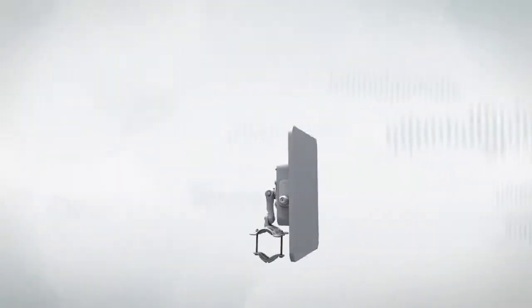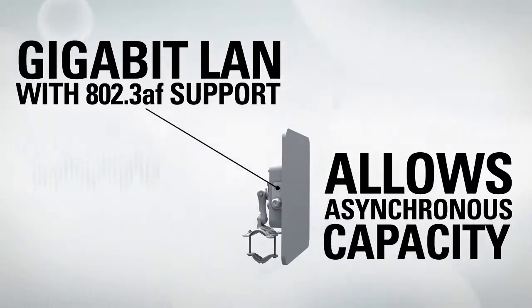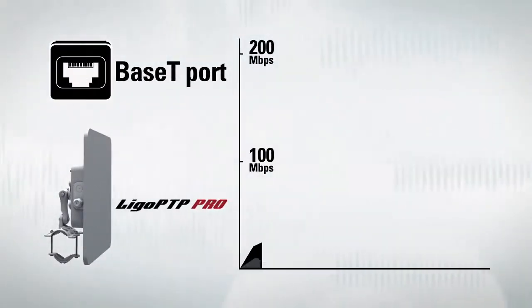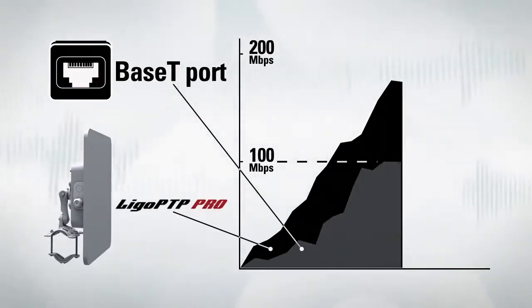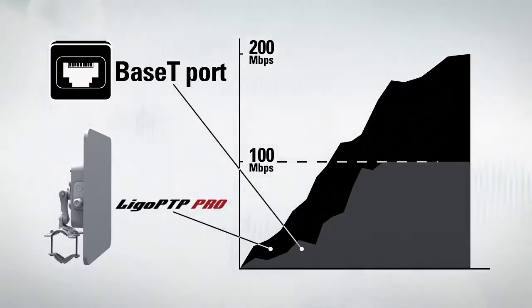A gigabit ethernet port and 802.3 AF standard support make the PRO series product line even more flexible. Allowing asynchronous capacity by eliminating the 100 megabit per second bottleneck on a standard 100 base T ethernet port.